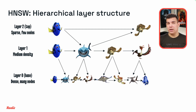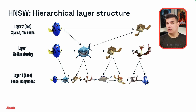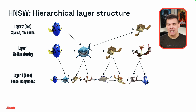HNSW formalizes this by creating a hierarchical graph. Each layer is a proximity graph where fish connect to their nearest neighbors, but not every fish appears in every layer. The number of layers grows on a logarithmic scale: a hundred fish might need two layers, a million fish might need six layers, whereas one billion fish may need nine. Space-wise, HNSW is also a very efficient data structure — more data doesn't mean proportionally more layers. This is the power of logarithmic scaling.